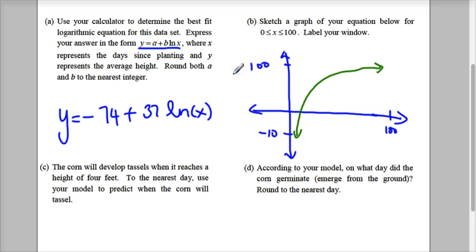C says, the corn will develop tassels when it reaches a height of 4 feet. To the nearest day, use the model to predict when the corn will be 4 feet. Now, you have to think about this. What is 4 feet? In terms of what? So look at the measurements. The measurements was given in inches. Okay? And here, inches.